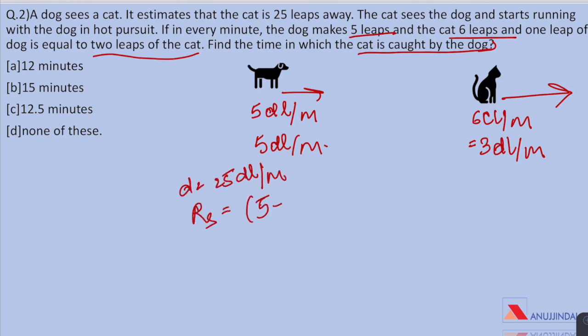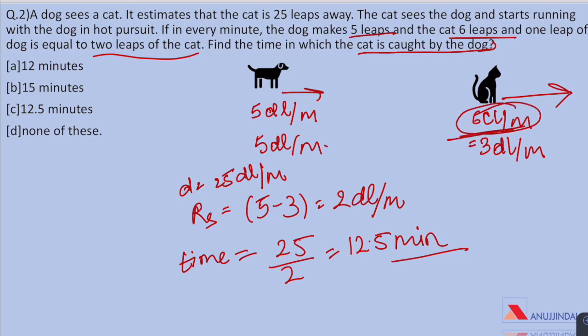Distance is 25 dog leaps per minute. Relative speed is 5 minus 3 which is 2 dog leaps per minute and the time taken by the dog to catch the cat is 25 by 2 which is 12.5 minutes. You can also solve the question by equating it from cat's side. I have equated it to dog leaps because the distance was also given in the terms of dog leaps.